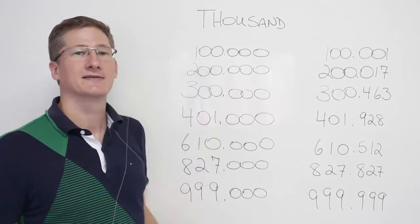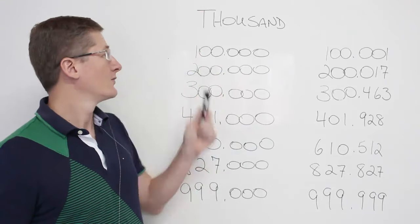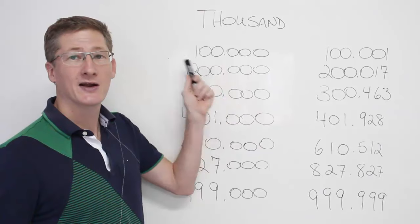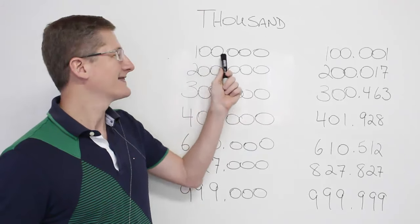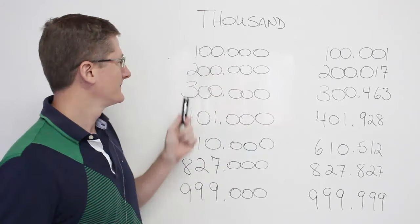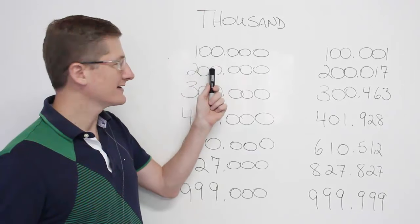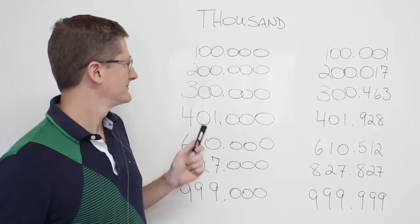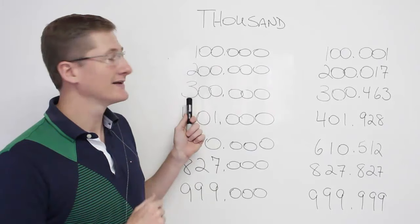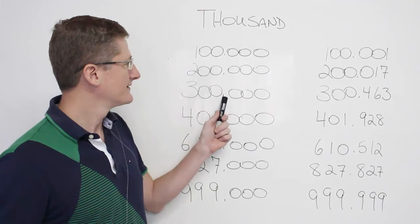You say it first, we have 100 plus thousand, right? 100,000, easy. Here we have 200,000. Here 300,000.